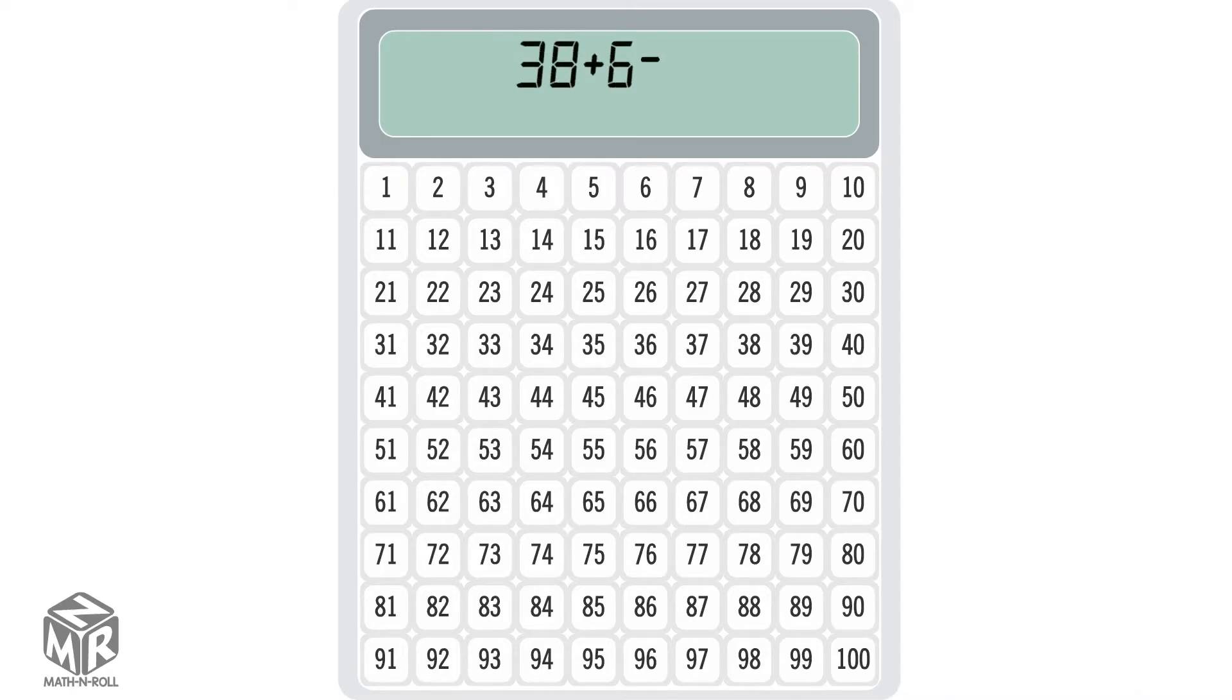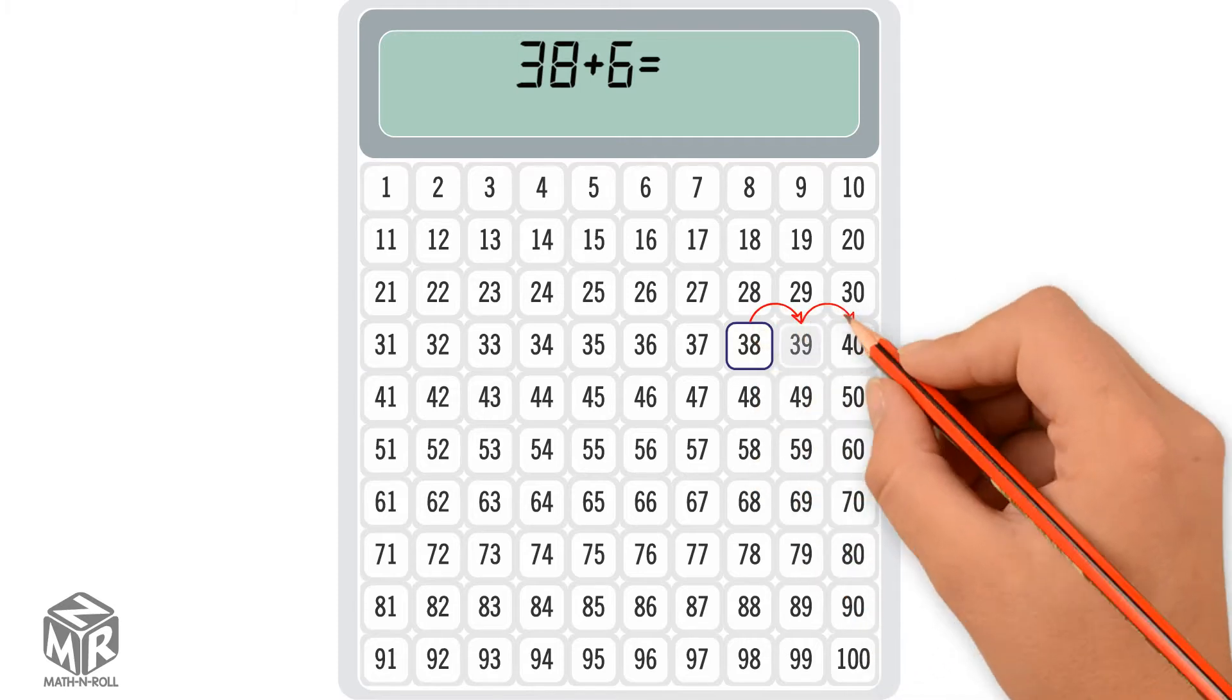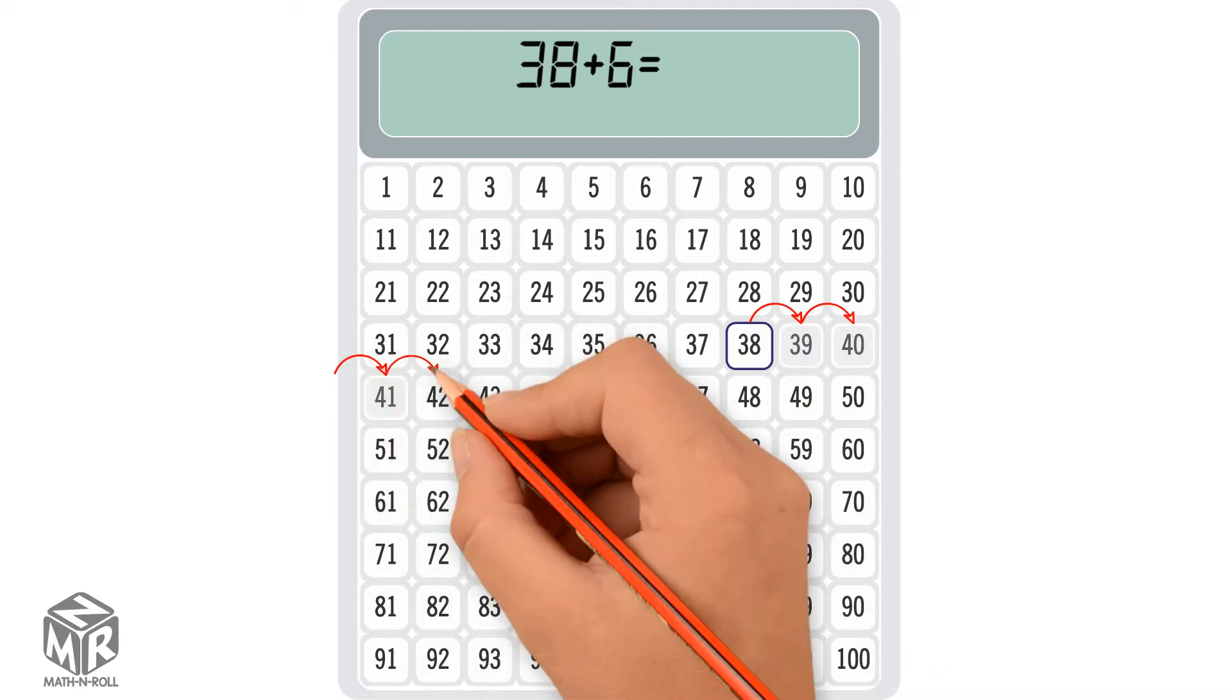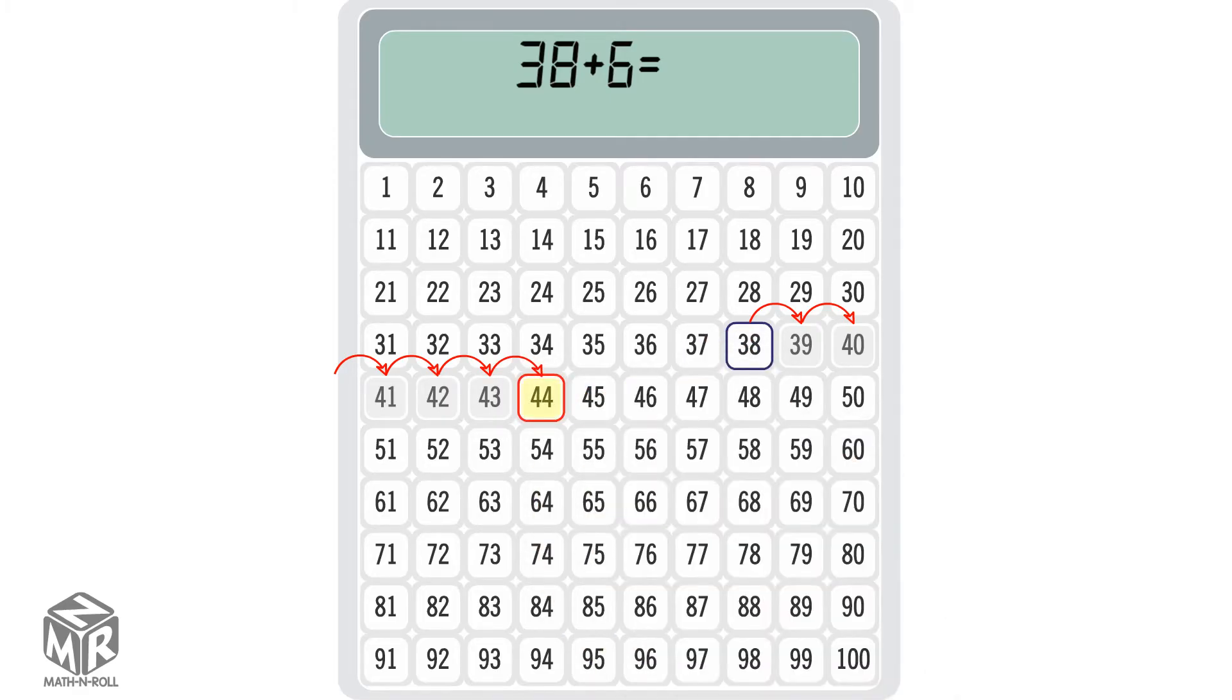38 plus 6. Start at 38. Count 6 to the next row. We get 44, so 38 plus 6 equals 44.